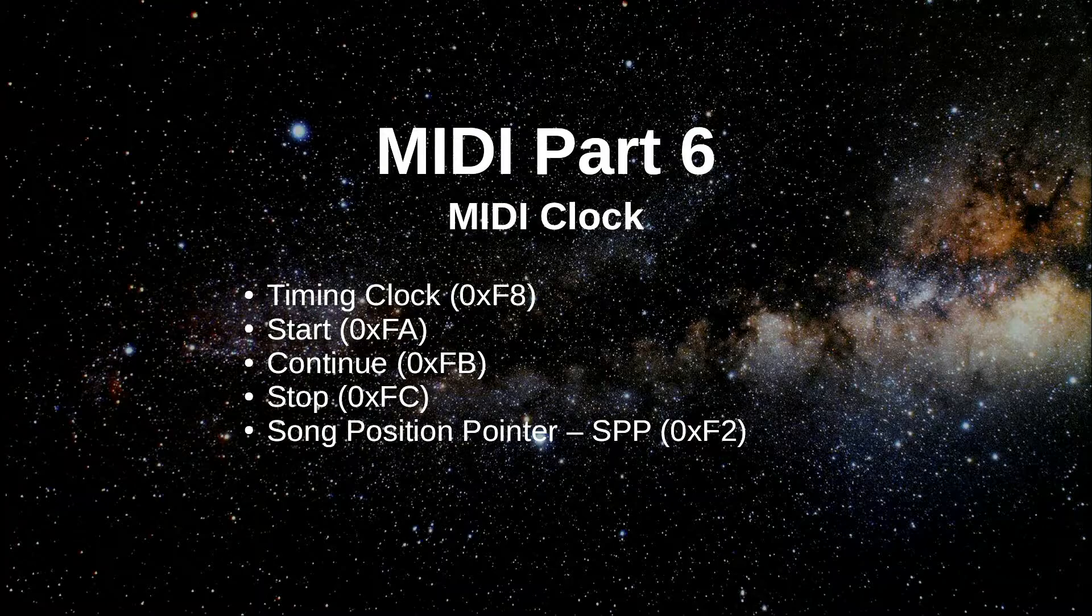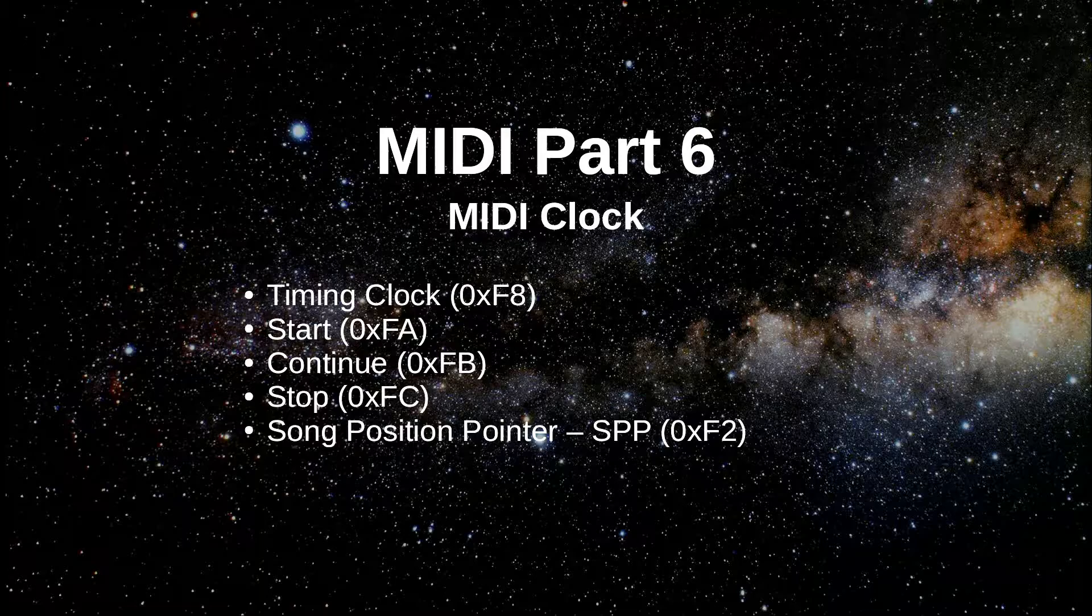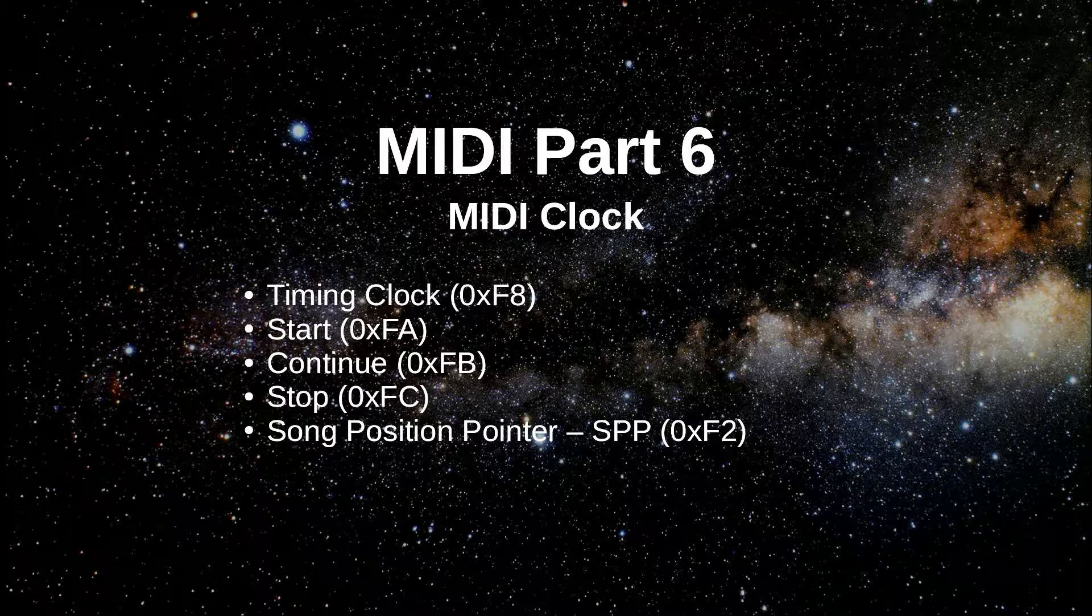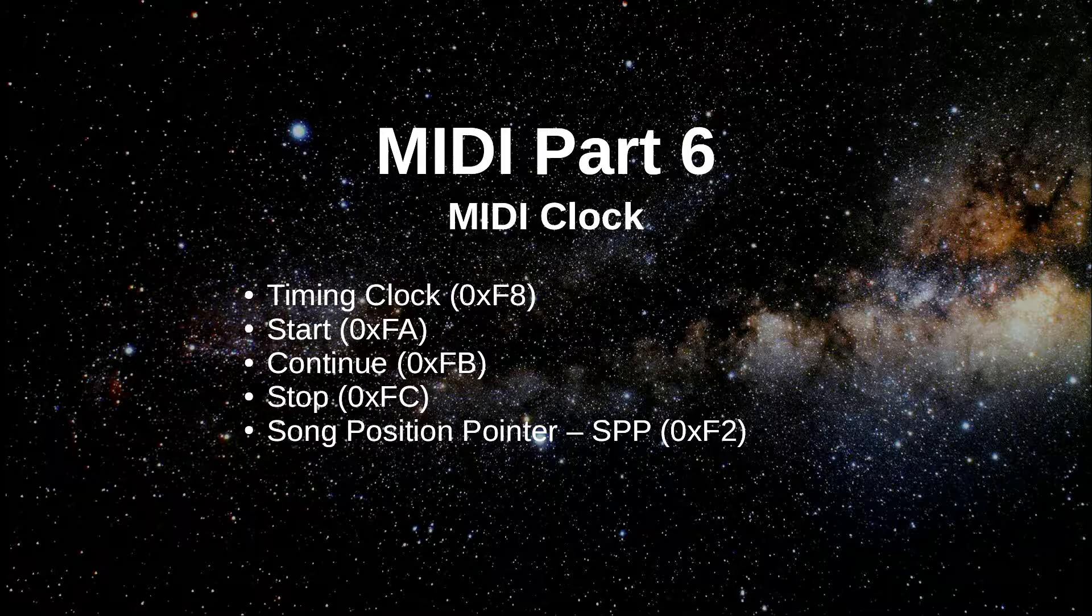So MIDI clock consists of these five messages. The first four of these messages are considered system real-time messages if you read the MIDI spec. That means those can occur anywhere in the stream, even in the middle of another message, and those are supposed to be handled with ultimate priority. The fifth message, the song position pointer, is called a system common message and it's designed to let you move back and forth within a song on a sequencer or drum machine.